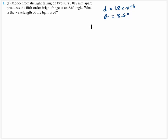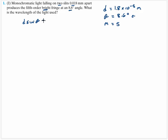Some solved problems for chapter 24. We have two slits, and we know the distance — go ahead and convert that back to meters. It says it's going to produce a fifth order, so that tells me that m is going to be equal to 5. Bright fringe is a key word to look for — that tells me it's going to be integer multiples of wavelength, which is the path difference. I know what the angle is, so for constructive interference I'm going to say d sine theta is equal to m lambda.